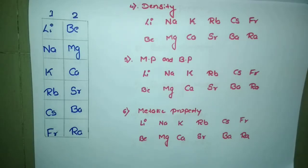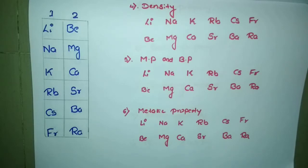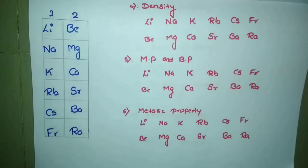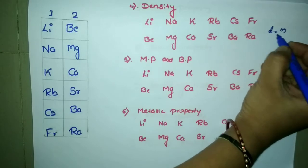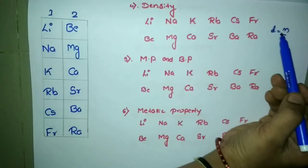This video is purely about the s-block elements. At the end of the video, we are going to get a clear picture of how the density, melting point, boiling point, and metallic property vary. Let's start with the first one — density. There are some exceptional cases in the case of density. The formula for density is mass divided by volume.